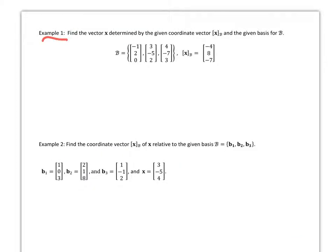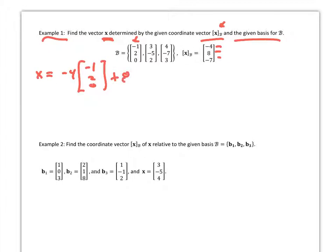Example 1 asks us to find the vector v determined by the given coordinate vector xb and the given basis B. All I'm going to do is take my coordinate values and compute: negative 4 times b1 = (negative 1, 2, 0), plus 8 times b2 = (3, negative 5, 2), minus 7 times b3 = (4, negative 7, 3). Putting those all together, I get (0, negative 1, 5).